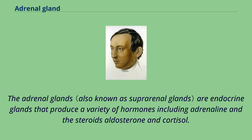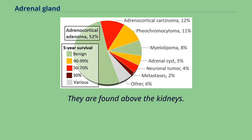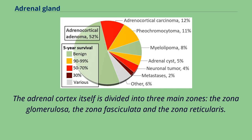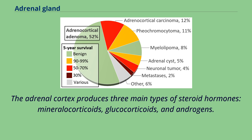The adrenal glands are endocrine glands that produce a variety of hormones including adrenaline and the steroids aldosterone and cortisol. They are found above the kidneys. Each gland has an outer cortex which produces steroid hormones and an inner medulla. The adrenal cortex itself is divided into three main zones: the zona glomerulosa, the zona fasciculata, and the zona reticularis. The adrenal cortex produces three main types of steroid hormones: mineralocorticoids, glucocorticoids, and androgens.